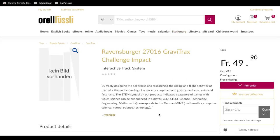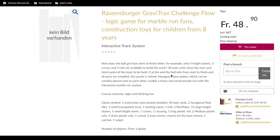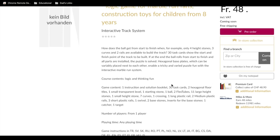Let's see what else is coming. Ravensburger has also released some information about these challenge GraviTrax challenge sets. One's called impact by freely designing the ball tracks. Well, let's see this explanation here doesn't give you any information, but Ravensburger 27016, the challenge impact. There's no description there, but there is a description under the challenge flow. How does the ball get from to start from finish? When, for example, only four height stones, three curves and two rails are available to build a track. 30 task cards show the start and finish point of the track to be built. If at the end the ball rolls from the start to the finish and all the parts are installed, the puzzle is solved.